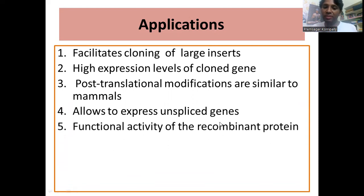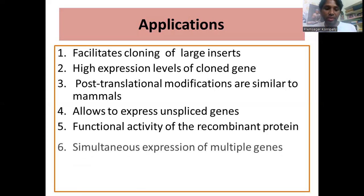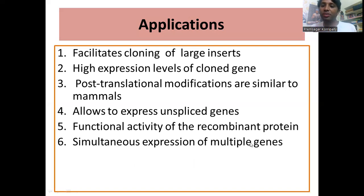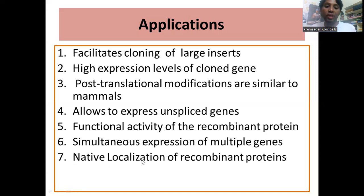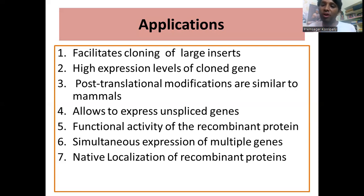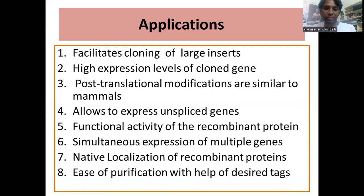Additional advantages include: functional activity of the recombinant protein — glycosylations and other modifications are also similar to mammalian systems, yielding active protein. Simultaneous expression of multiple genes is possible, not just a single gene. Native localization of recombinant proteins is maintained because it is a eukaryotic cell close to mammalian systems — whether the protein is intended for the cytoplasm, mitochondria, nucleus, plasma membrane, or secretory pathway, the correct localization is achieved. You can also modify localization by adding tags, and purification is straightforward with this system.